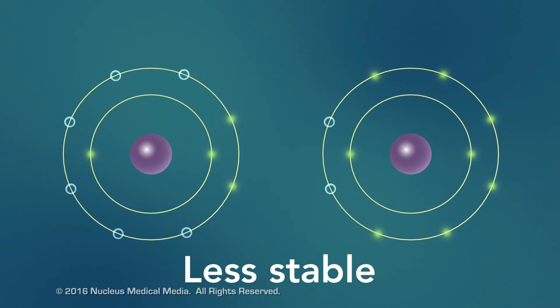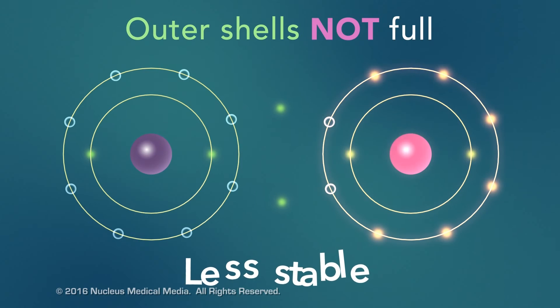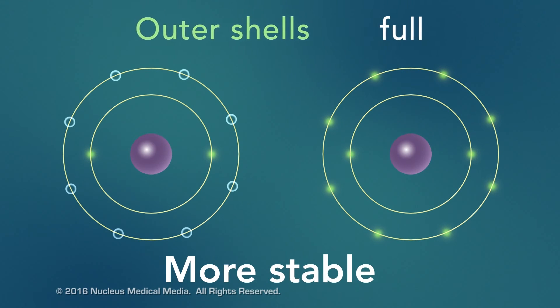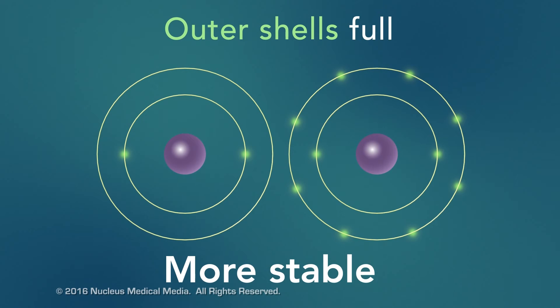Atoms with fewer valence electrons than their outer shell can hold aren't as stable as atoms with full outer shells. However, these atoms can become more stable if their outer shell is filled. This can happen either by losing electrons to another atom or attracting electrons from another atom. This interaction of valence electrons between atoms results in the formation of chemical bonds.